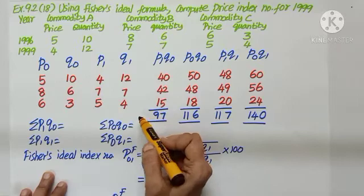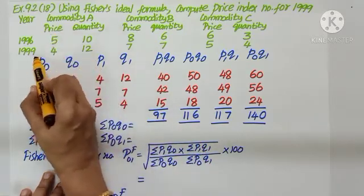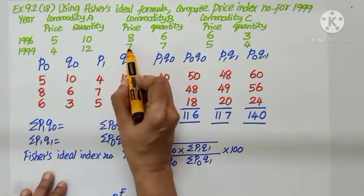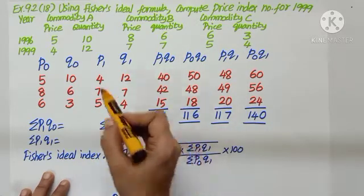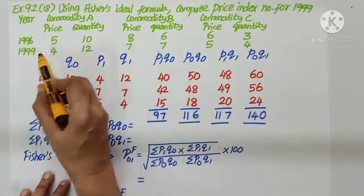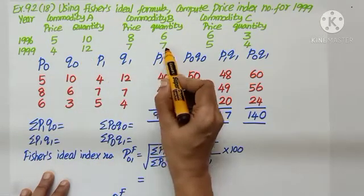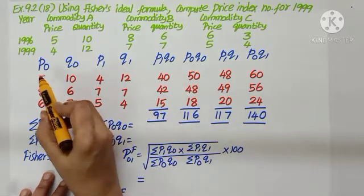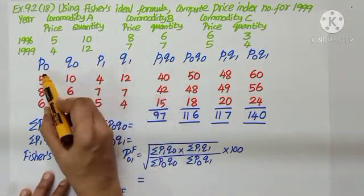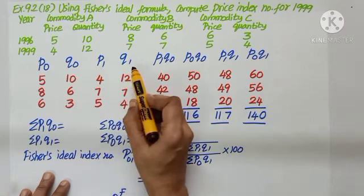All the price values in 96 I will write under P0: 5, 8, 6. Quantity 10, 6, 3 will come under Q0. Similarly, 1999 is the current year, so P1 or Q1. Put the heading P1, Q1. Price under 99, 4, 7, 5 will come under P1. Quantity under 99, 12, 7, 4 will come under Q1. So identify the four notations: P0, Q0, P1, Q1.